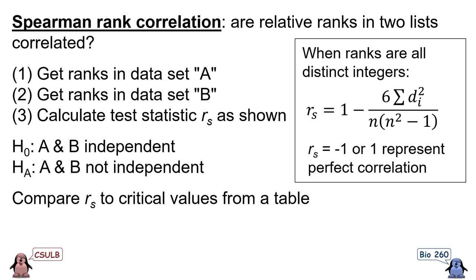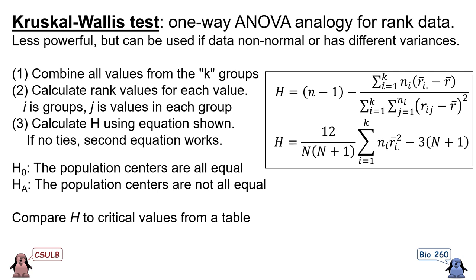The Kruskal-Wallis test is analogous to the one-way ANOVA, but instead of using numerical values, we use rank values. Instead of looking at the actual magnitude of the numbers, we just think about whether it is the largest, second largest, third largest, etc. This technique compares whether the ranks of different groups tend to be similar or significantly different. This test is less powerful than the ANOVA, but can be used if the data is not normally distributed or if their variances are different.